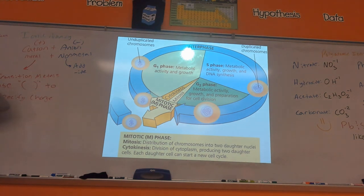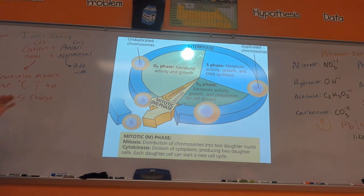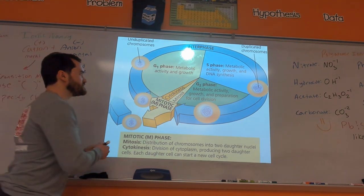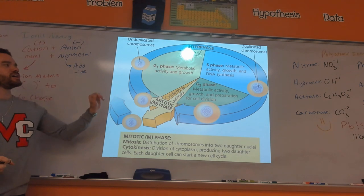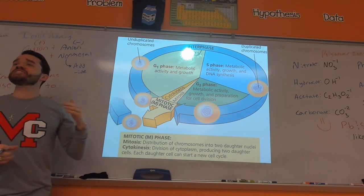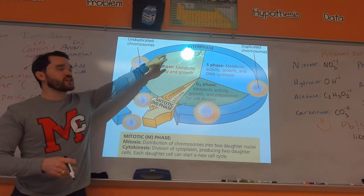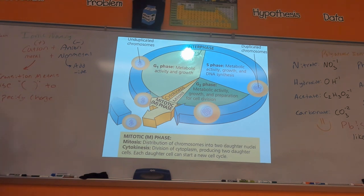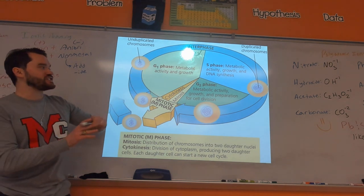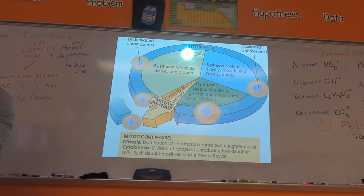We talked about this slide last class — just wanted to make another pass going over the cell cycle. Remember, 90% of the cell cycle is interphase. Interphase is broken up into three phases: G1, S, and G2. The G stands for gap — it's the intermission between cell division. The main idea of the cell cycle is the life cycle of a cell culminating in it choosing to divide and make two new identical daughter cells. In G1 and all of the phases, you're doing metabolic activity and growth.